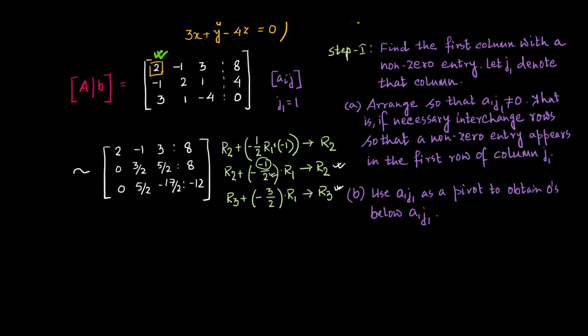Applying these two row operations gives the equivalent matrix: 2, minus 1, 3, 8; 0, 3/2, 5/2, 8; 0, 5/2, minus 17/2, minus 12. The fractions in the multipliers correspond to A(2,1) and A(3,1) divided by the pivot A(1,1). This establishes the generic pattern for Gaussian elimination, making it suitable for algorithmic implementation.